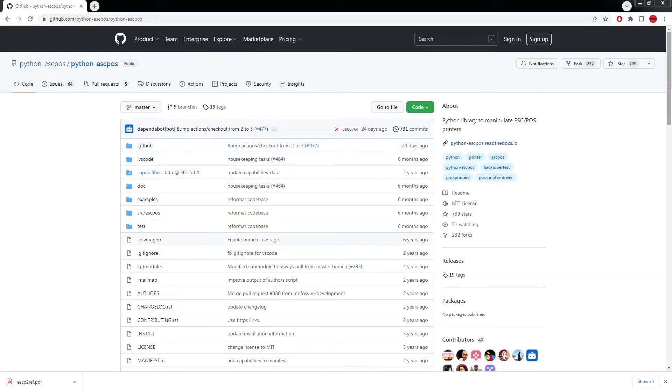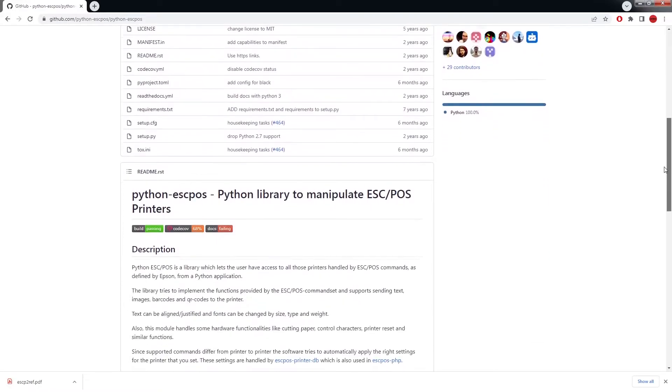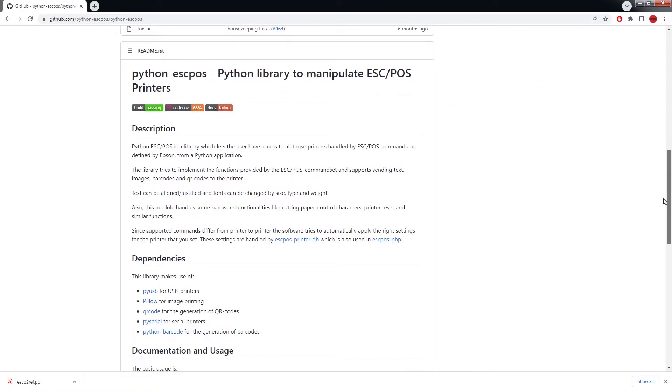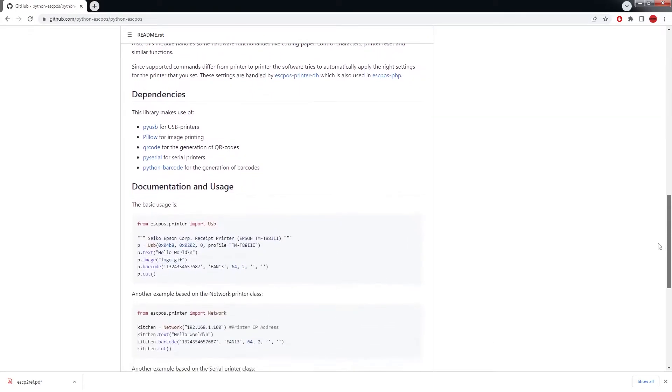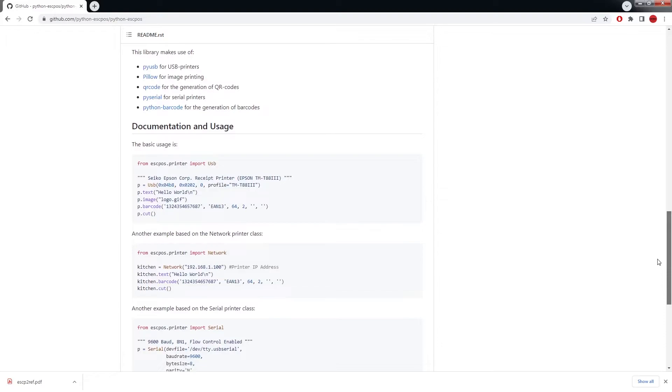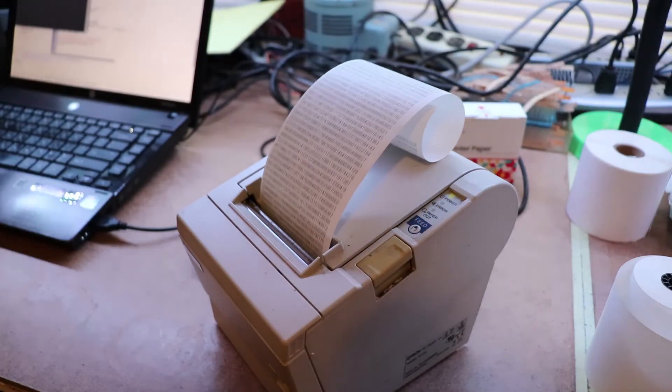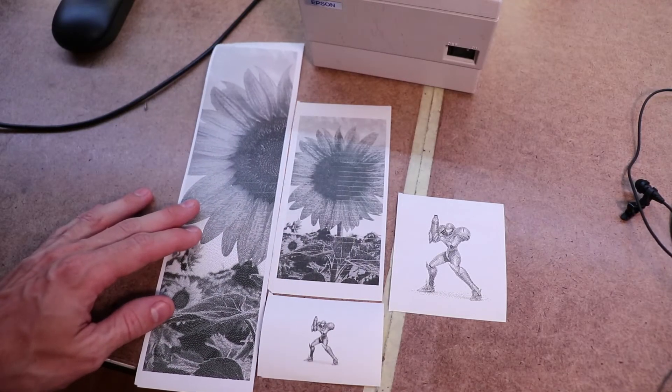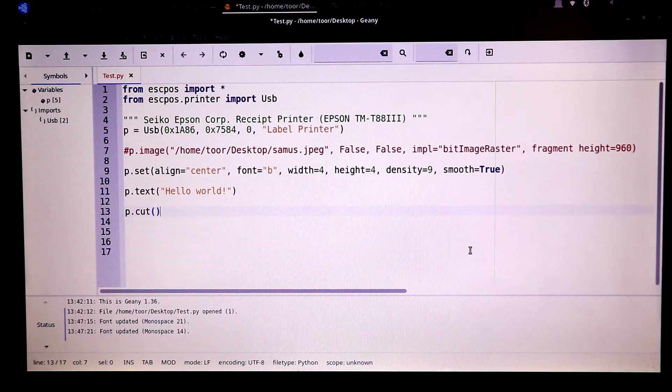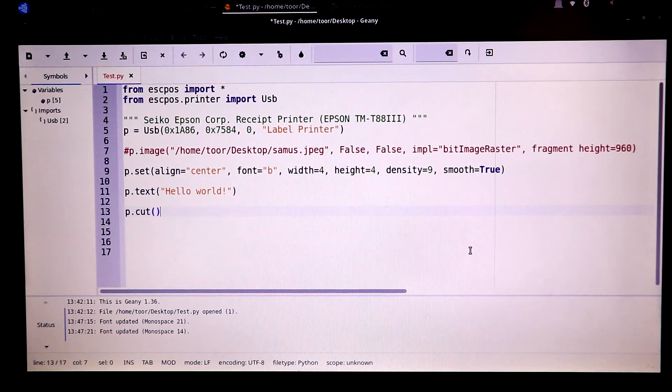As fun as this is, a more useful setup is using an actual library like this Python one I found. Link will be in the description. This library has proper documentation and allows you to communicate with the printer through serial, parallel, or internet connections. It not only allows you to print text, but to also print images, QR codes, and barcodes. This is an example of some simple coding I did in the Gini Development Environment application using the library. You can see I initialized the printer using its vendor and product IDs. This code is to print an image, which I have commented out. This code is configuring the text settings, and here I have the text I want to print out. At the very end, you can see I also tell the printer to cut the paper.